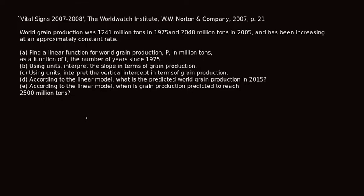In this video we're going to do a word problem concerning a linear function. Here is an example from the textbook — it comes from the World Watch Institute, Norton and Company. World grain production was 1,240 million tons in 1975 and 2,048 million tons in 2005, and has been increasing at an approximately constant rate. That constant rate means we're talking about a linear function.